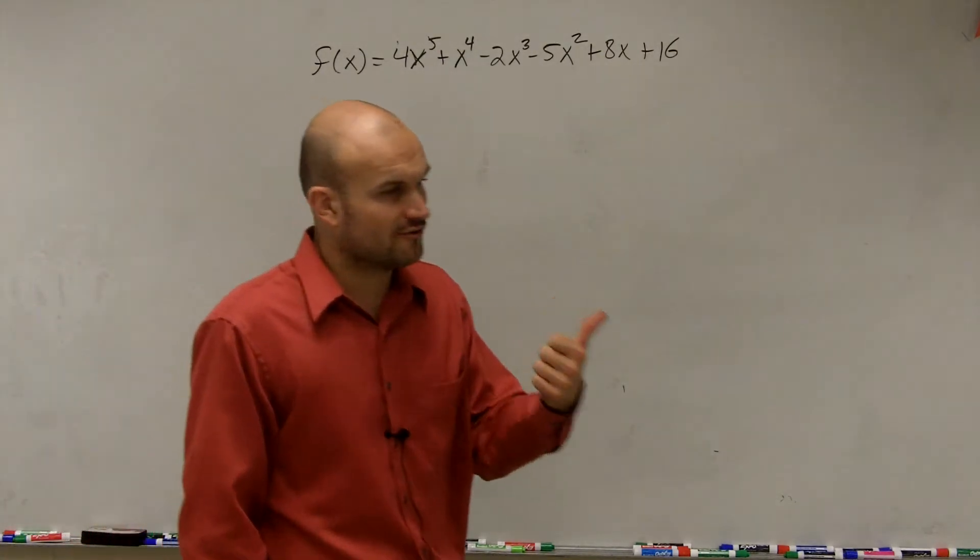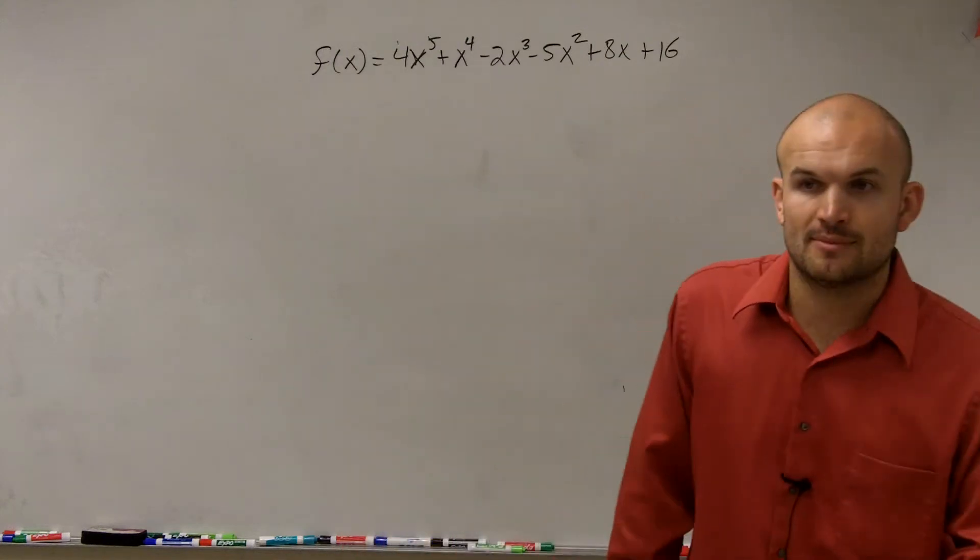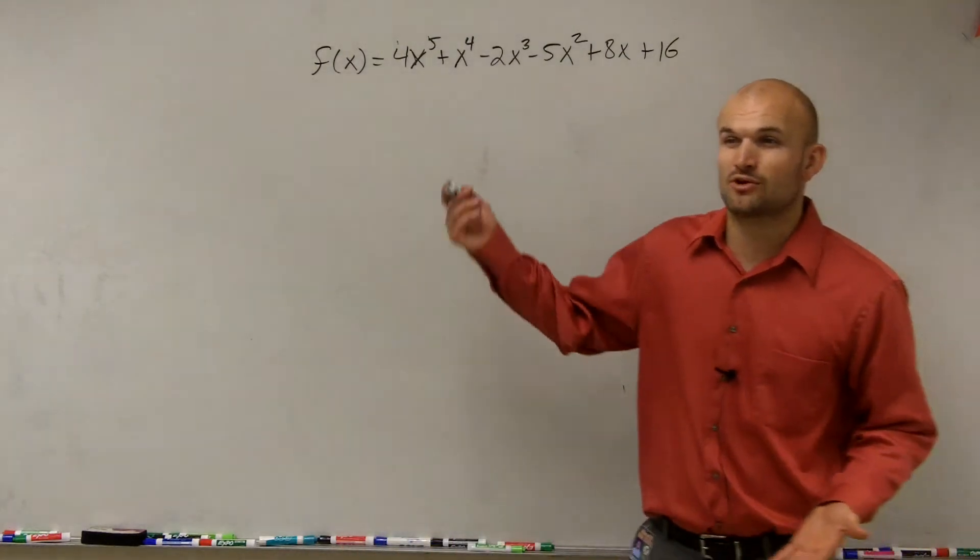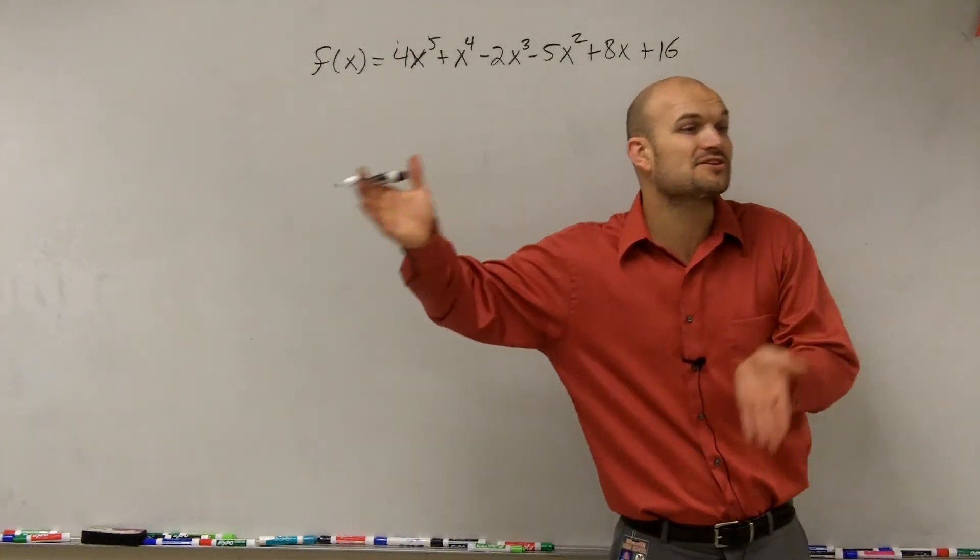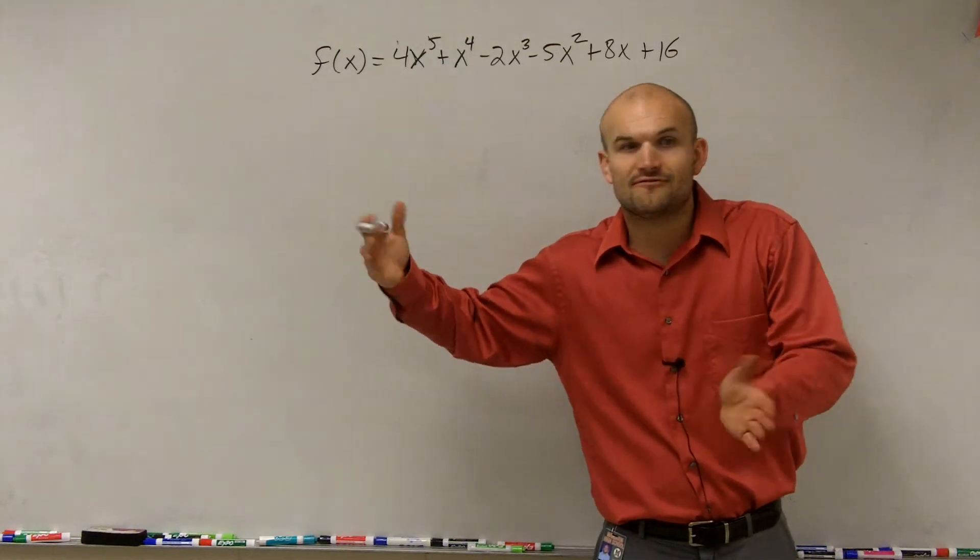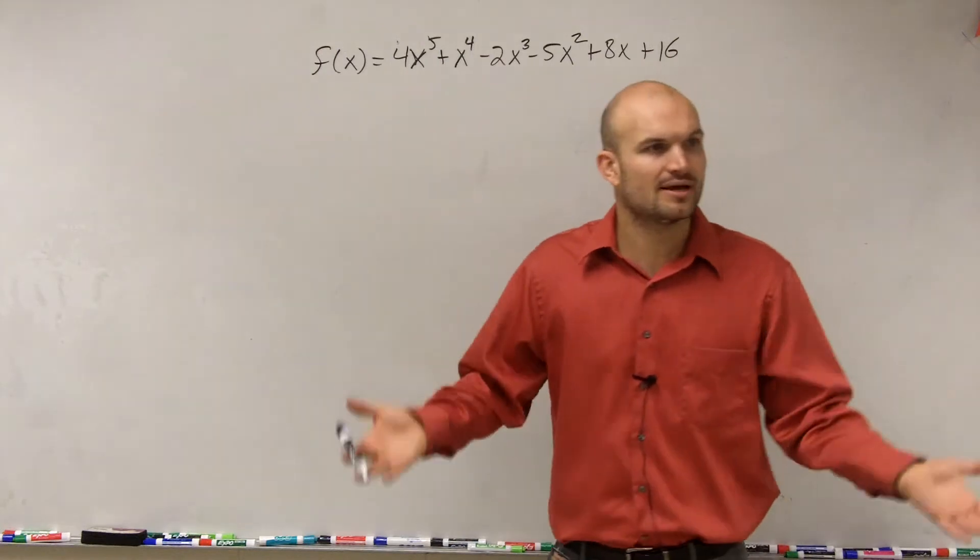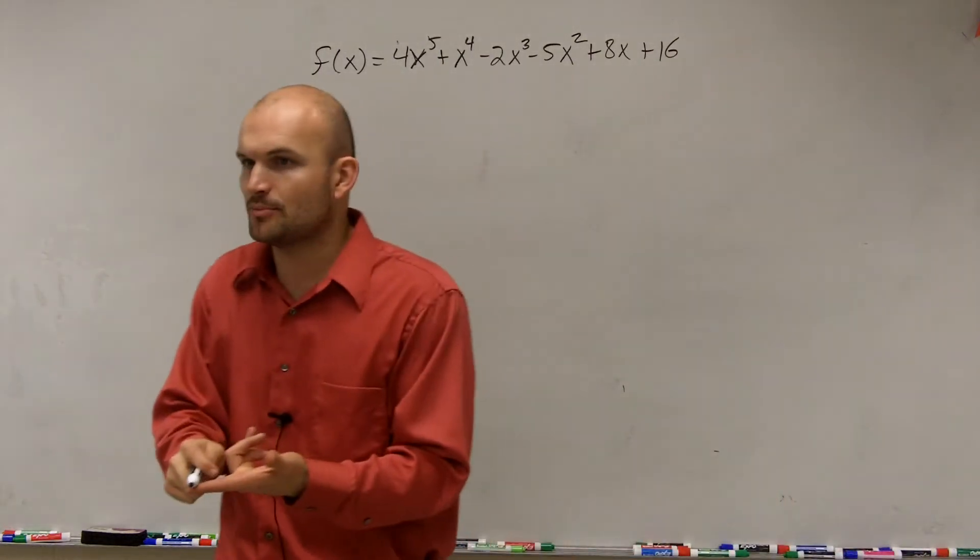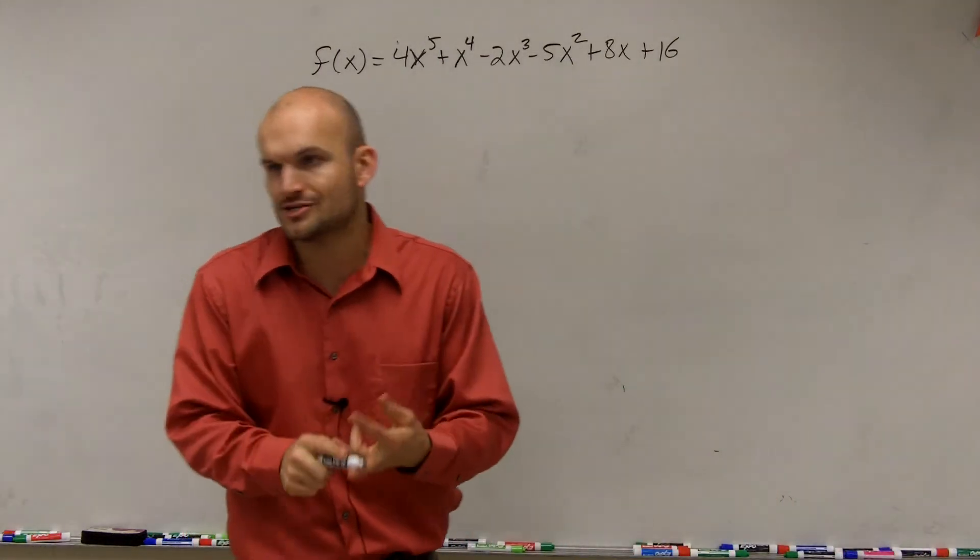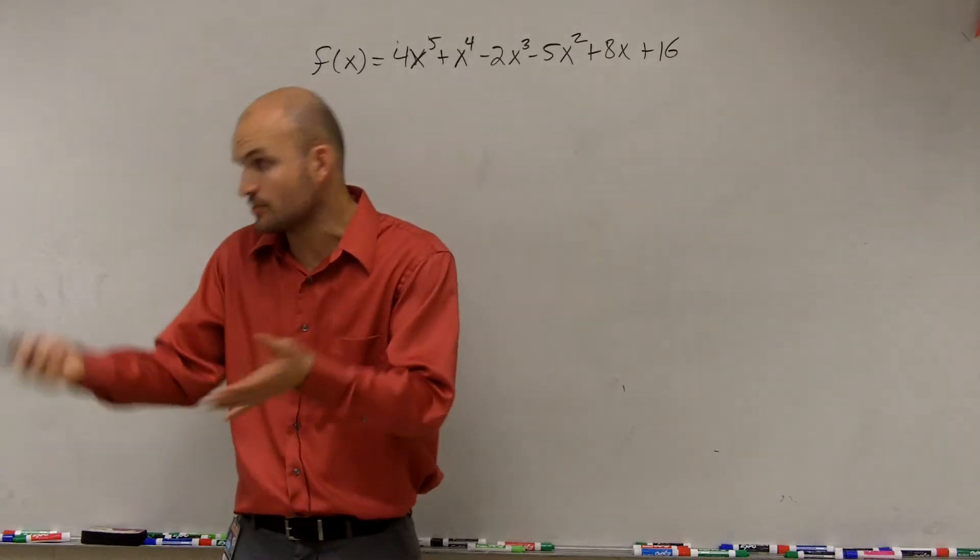You could either factor it, right? Or remember the ones that were kind of bigger polynomials, I said hey, here's a factor, find all the rest of the zeros. So then you apply synthetic division, all that kind of stuff, and it made sense, right? But if you had a linear problem you'd have solved it. If you had a quadratic, you'd use factoring or completing the square, a quadratic formula.